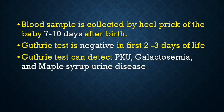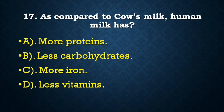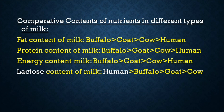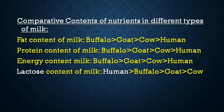Next question: Compared to cow's milk, human milk has — more protein, less carbohydrate, more iron, or less vitamin? Correct answer is more iron. In terms of fat, protein, and energy content, buffalo milk is highest, then goat, then cow, then human. However, lactose content is highest in human milk, then buffalo, then goat, and lowest in cow milk.